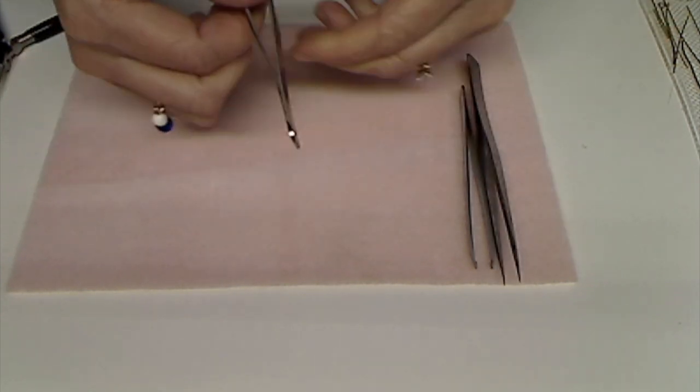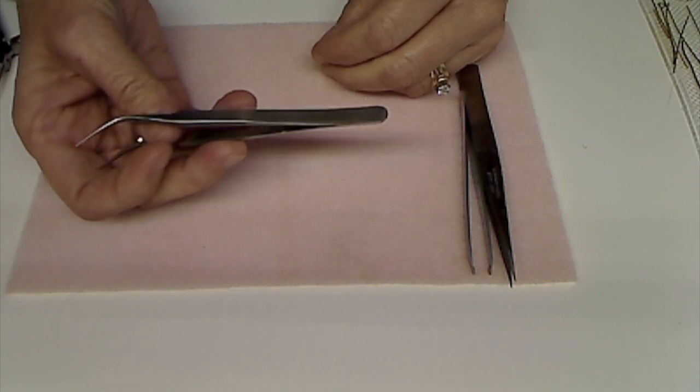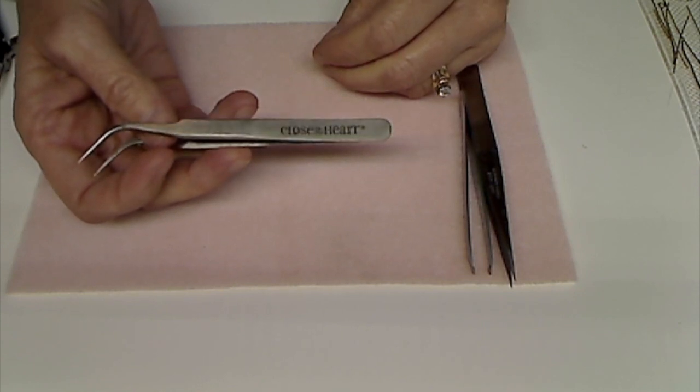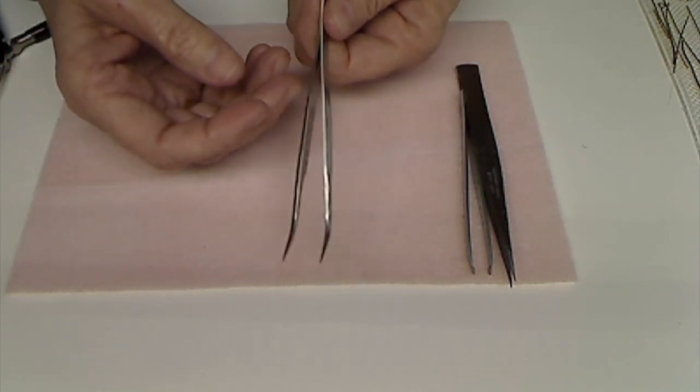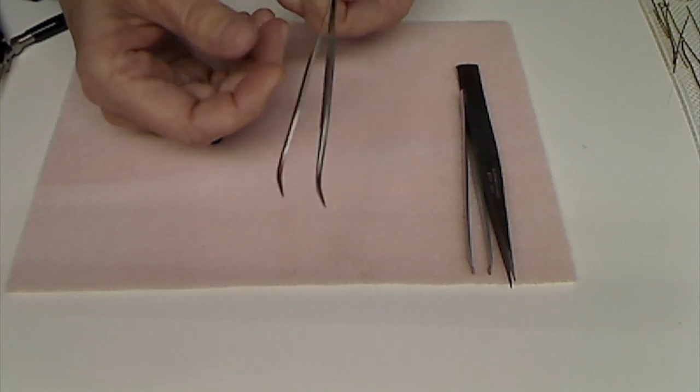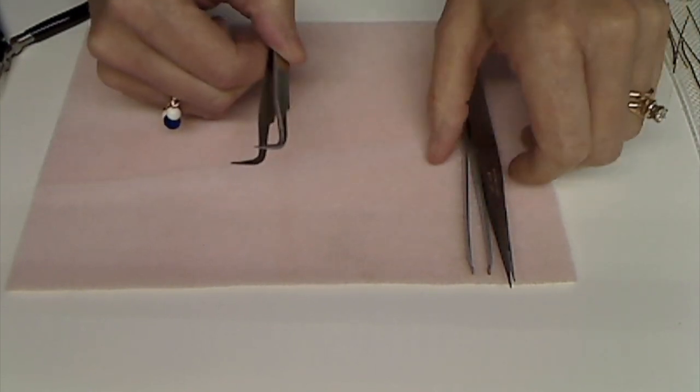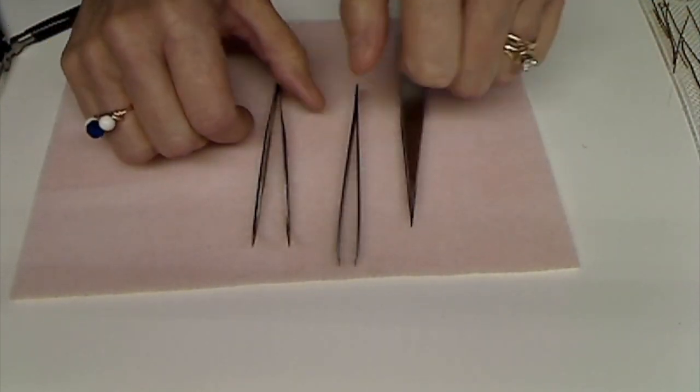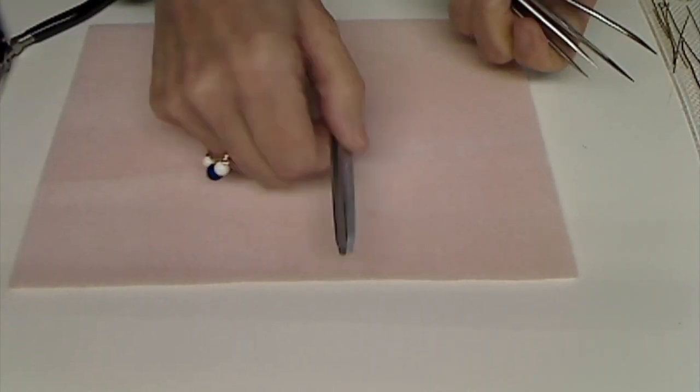And then this is a pair of tweezers that I got from Close to My Heart. They're a scrapbooking company. But you can buy these all over the place, anywhere. And like I said, you can use your plain old tweezers that you tweeze your eyebrows with.